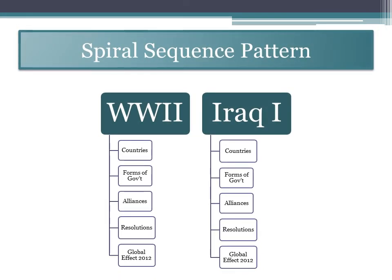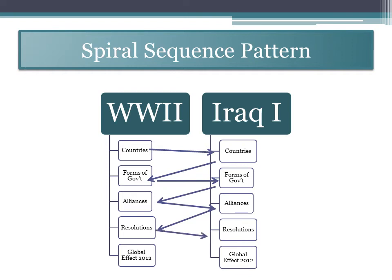If you chose the spiral sequence pattern, you can see how the learner would learn content from both topics horizontally and then spiral vertically and in a diagonal pattern. This makes comparison easier, and there is a built-in review and synthesis of the information from both topics.